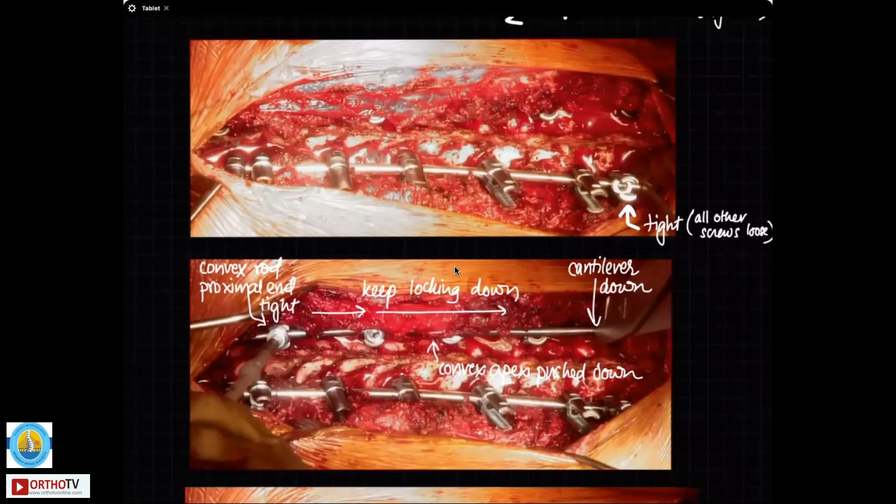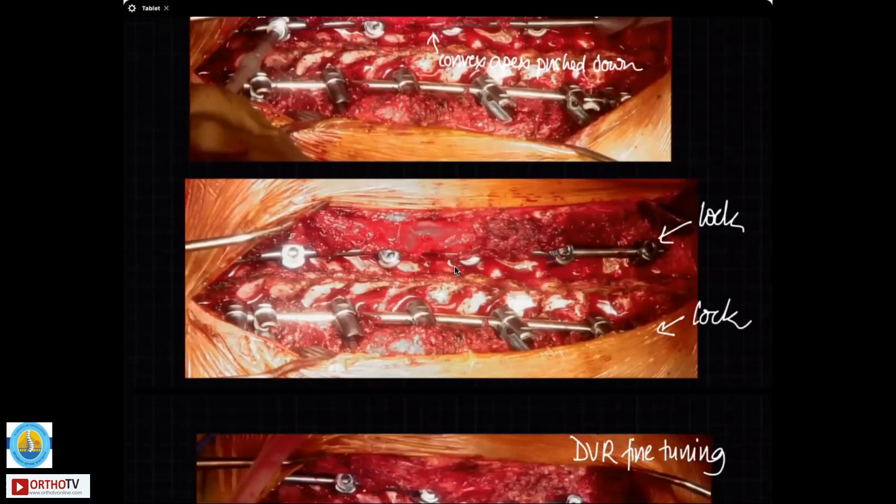And then start from the proximal end, the convex rod. Again, it is a cobalt chrome rod on the convex side. You tighten at the proximal end and this is an under-contoured rod. So this is flatter than your expected thoracic kyphosis that you want to achieve. So you lock this and then as you keep going down, keep on locking it. So you will see that this rod will stick away from the screws here and you want to cantilever it down. By doing this, you are also pushing down on the apex and causing the vertebral body to derotate like that. That means this concave pedicle will move out of the chest and convex pedicle will be pushed down and that causes the derotation of the vertebra. Here finally, you are locking this and then you can lock it. Then you can see that the vertebral rotation has been corrected like that.